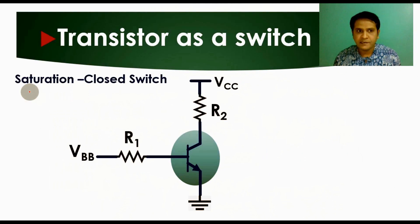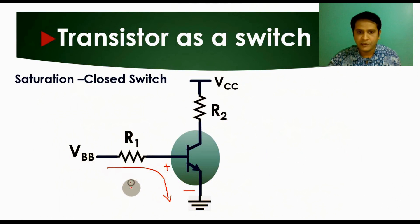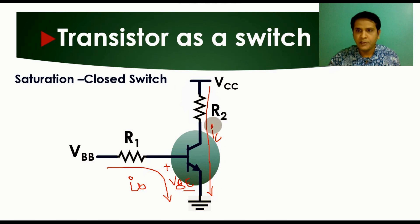Now let us understand how the transistor works in saturation region — it acts like a closed switch. If you apply some base voltage VBB, there will be some current IB flowing through the base to emitter junction. The voltage across the base to emitter junction, VBE, is typically 0.7V for an NPN transistor. There will also be current IC flowing through the collector to emitter junction.